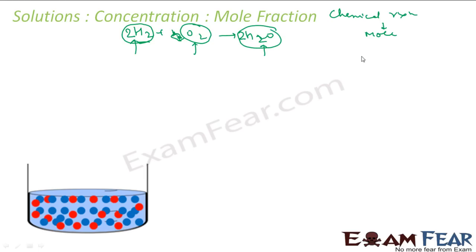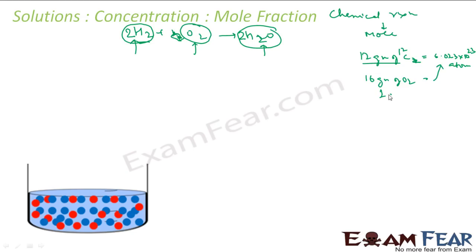12 grams of carbon will have how many atoms? It has one mole of atoms, that is nothing but 6.023 × 10²³ atoms. Similarly, 16 grams of oxygen will give that many atoms, and 1 gram of hydrogen will give that many atoms. In a chemical reaction, it is the number of atoms that matters. Since there are a huge number of atoms, we generally deal with number of moles rather than individual atoms.